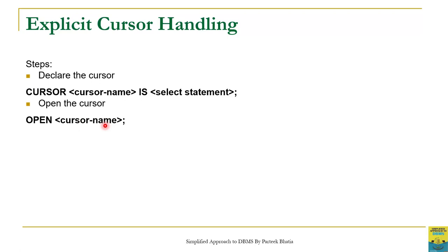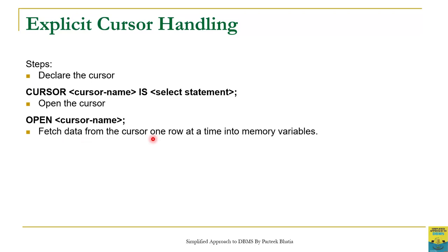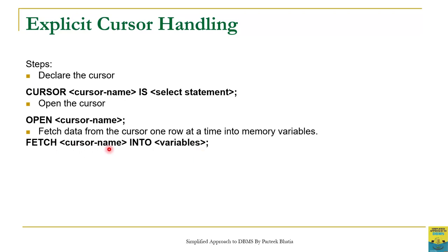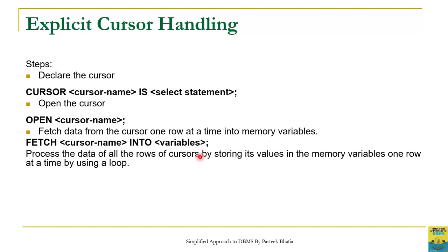The third step in handling an explicit cursor is to fetch the data from the cursor one row at a time into memory variables. To fetch the data, we use the FETCH statement with the syntax: FETCH cursor_name INTO variables. Here cursor_name is the name of the user-defined cursor, and the values of the columns fetched will be stored in these variables. These variables must be declared in the declare section. Since the FETCH statement fetches one row at a time, we have to use it in a loop so that the values of all rows stored in the cursor can be fetched and processed.